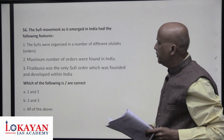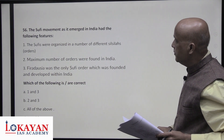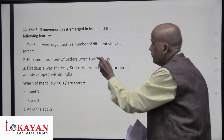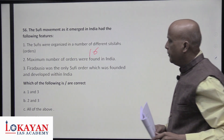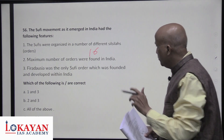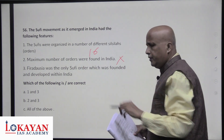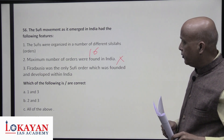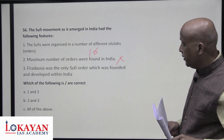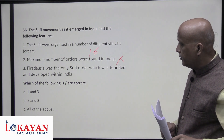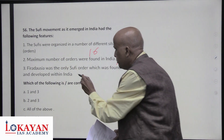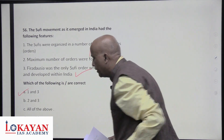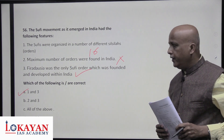The Sufi movement in India had the following features: Sufis were organized in different Silsilas (orders) — 16 major Silsilas are there. However, not all exact orders were founded in India; most were founded in Afghanistan or Persia. The Firdausi order, popular in Bihar, was the only Sufi order founded and developed within India — its founder was Baharuddin Zacharia. Statements one and three are correct.